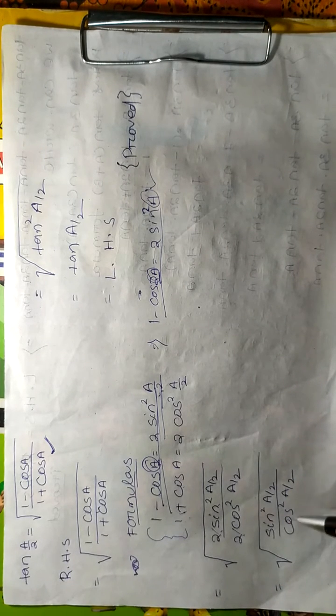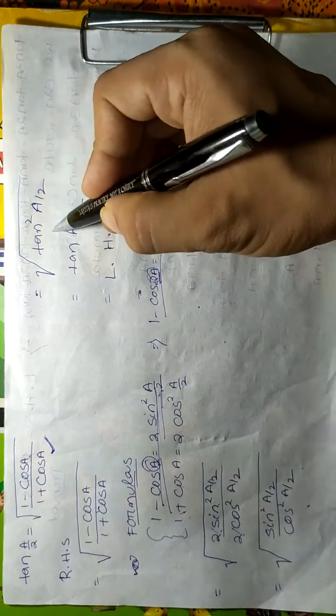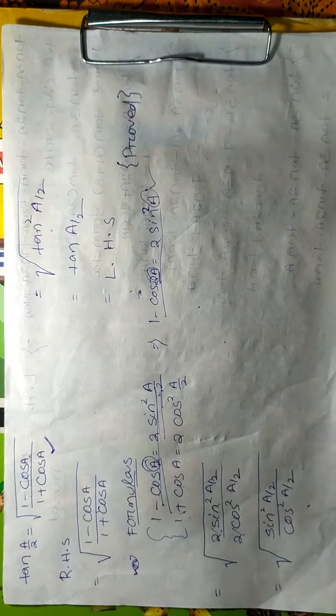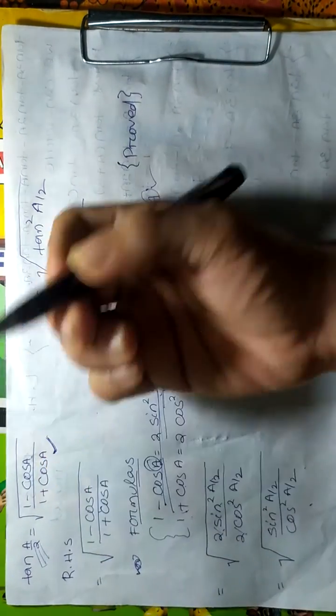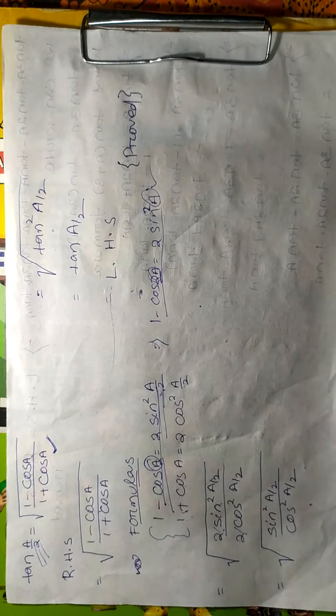Sine square a by 2 over cos square a by 2 becomes converted into tan square a by 2, which after removing the square root bar, we get tan a by 2, which is our required LS. Hence we get our answer.